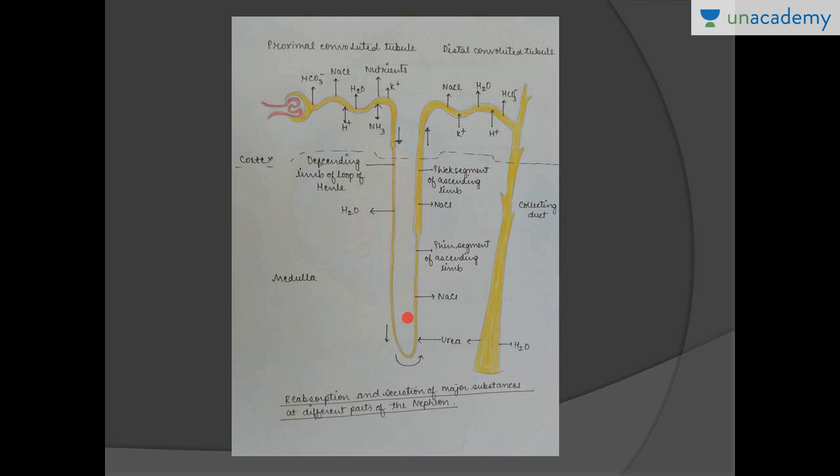In tubular reabsorption overall, glucose, amino acids, and Na+ ions are absorbed actively, while other nitrogenous waste products are absorbed passively. Water absorption is also passive only.